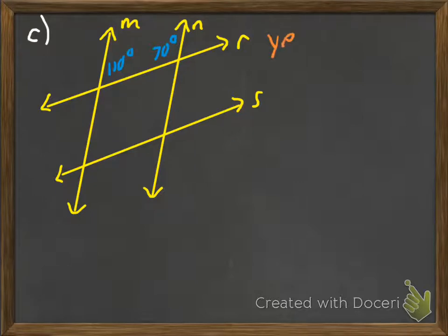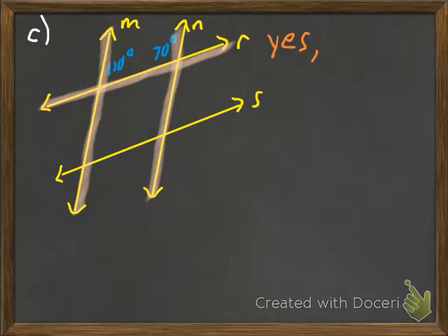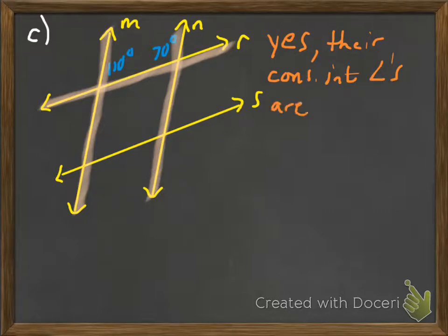In the next example, the answer is yes, M is parallel to N. The 110-degree angle is formed by line M with line R, and the 70-degree angle is formed by line N with line R. Those two angles are consecutive interior angles, and since 110 plus 70 equals 180, they are supplementary. When consecutive interior angles are supplementary, the lines are parallel — so yes, the reason is that their consecutive interior angles are supplementary.